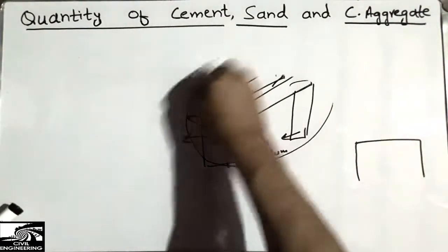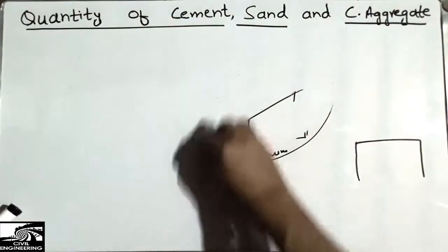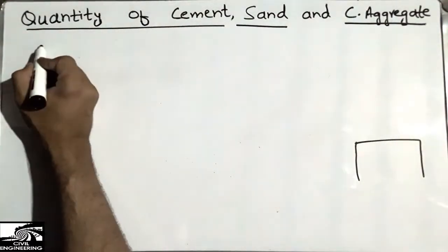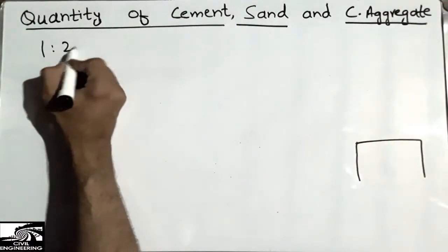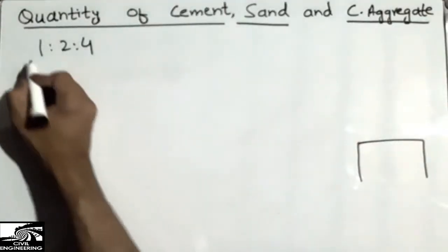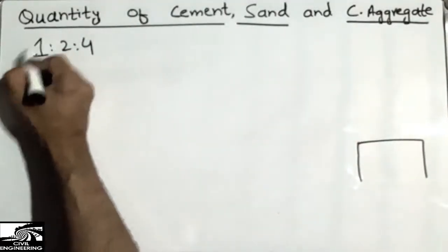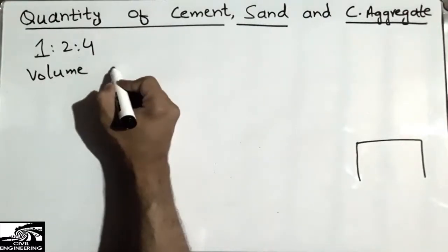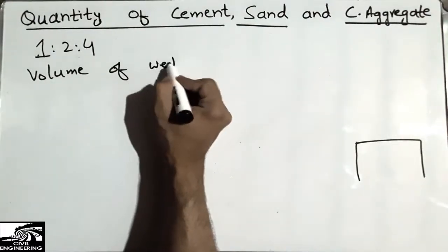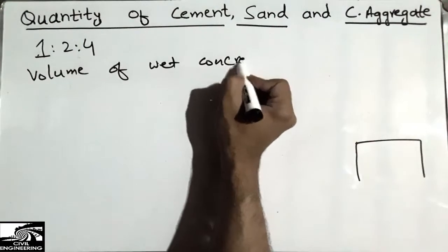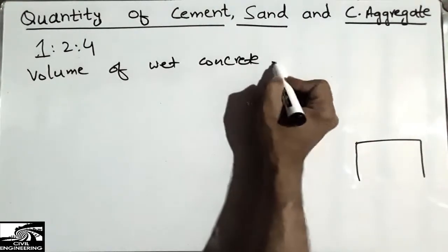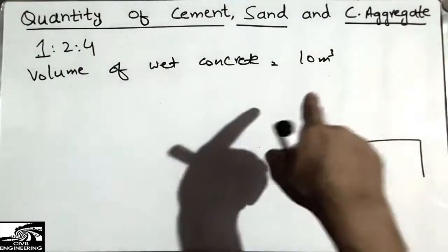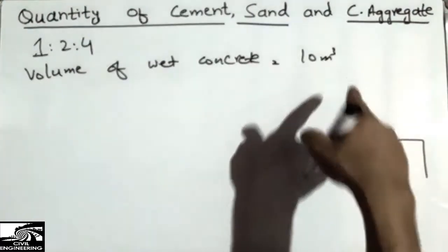We know from laboratory data that the concrete strength is 3000 psi with a mix ratio of 1:2:4. The volume of wet concrete used in this frame structure is 10 cubic meters.